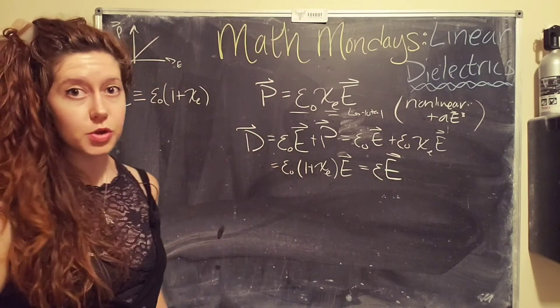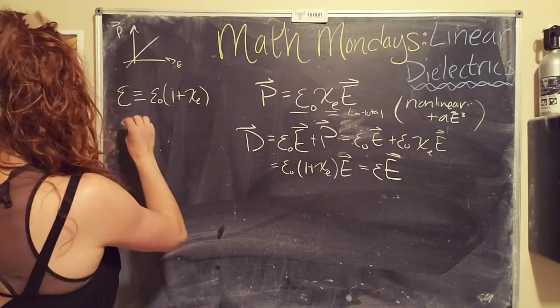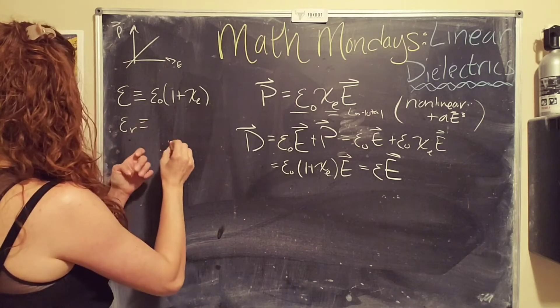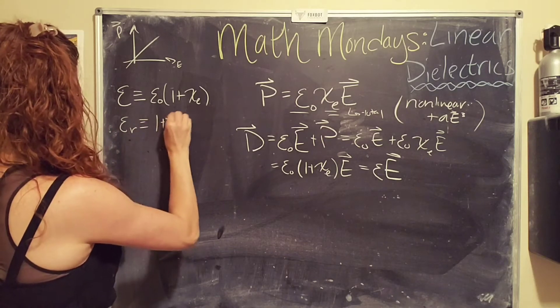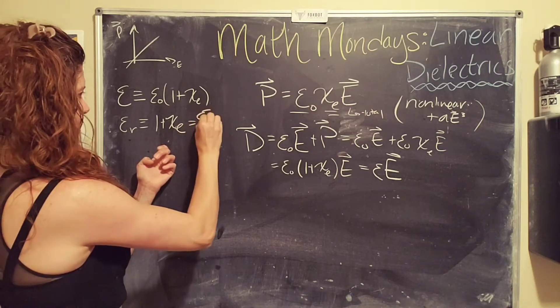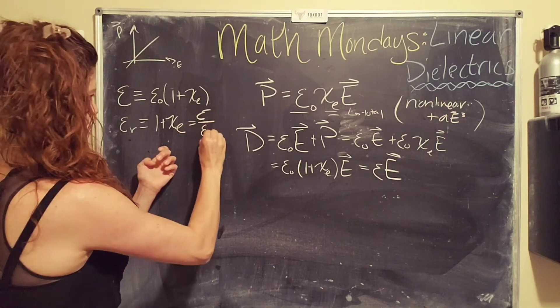And I also want to mention the relative permittivity, which is epsilon subscript r, which is defined to be just one plus the susceptibility, or epsilon divided by the vacuum permittivity.